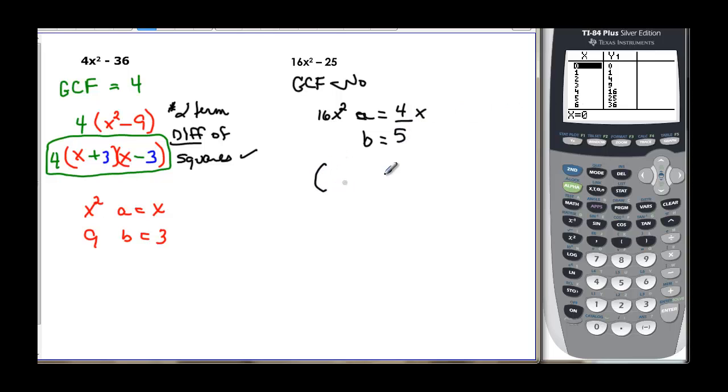So here we go. First terms are 4x and 4x. Last terms are 5 and 5. One of them has to be positive, and one of them has to be negative, and we're done factoring.